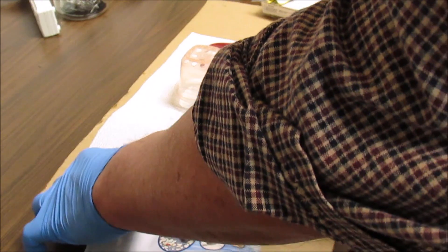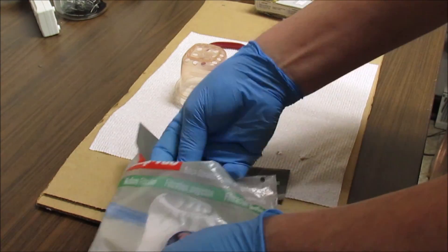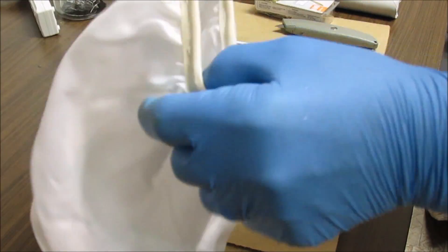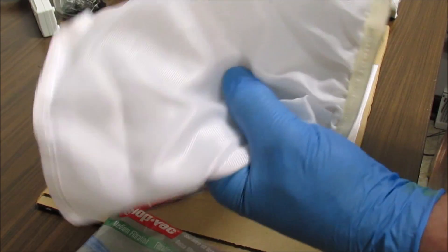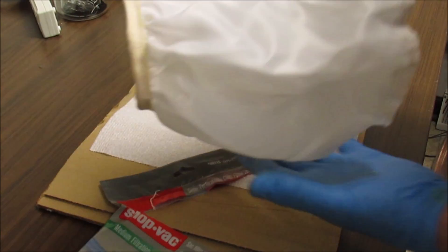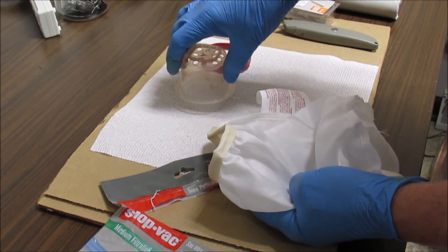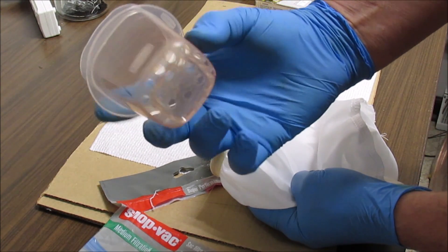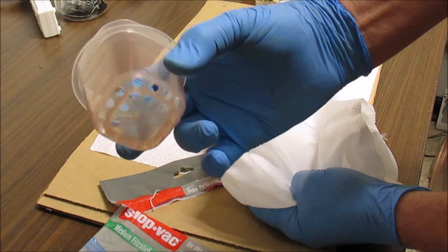Okay what I like to do is, here's my anode basket. It's just a little Rubbermaid food cup with some holes drilled in the bottom of it.